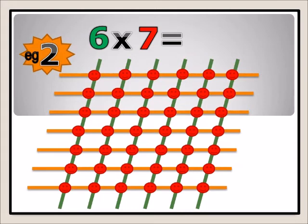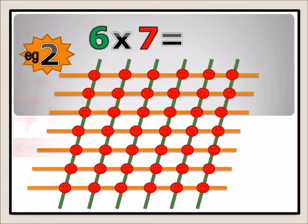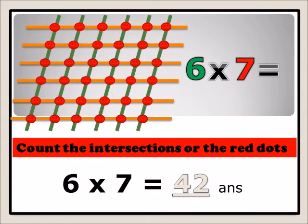Example two: six times seven. As usual, you rule your lines — column six and then rows seven, then column six. You count all the dots, or where they meet. Six times seven equals forty-two.